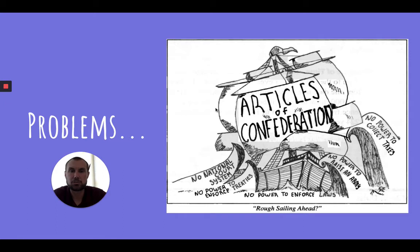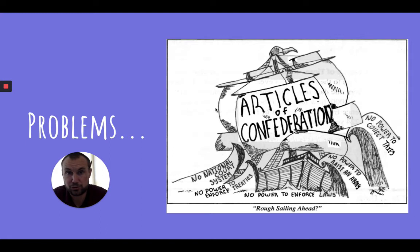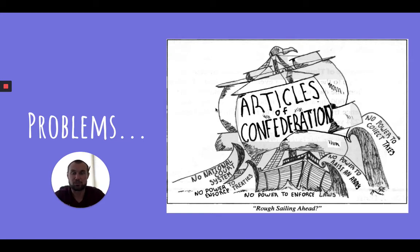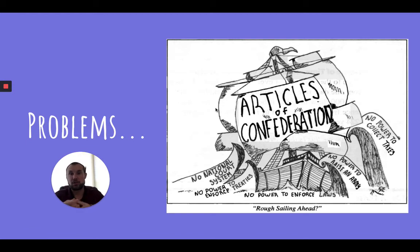There were many problems with the Articles of Confederation. Specifically, they couldn't raise money — they had to ask states for funds — which meant the debt, especially after the Revolutionary War, was accumulating without being able to pay off any interest. States would set tariffs against each other, meaning goods from New York would be taxed going into Massachusetts, favoring Massachusetts products. There was no judicial system, they couldn't raise an army, and they couldn't enforce treaties. Basically, Congress under the Articles of Confederation had very little to no power.